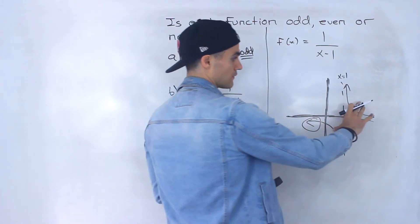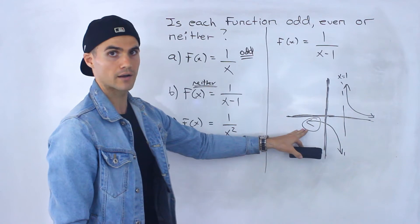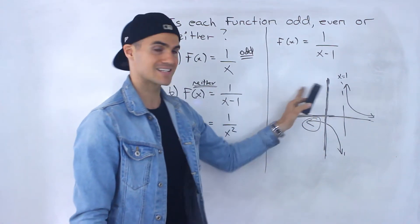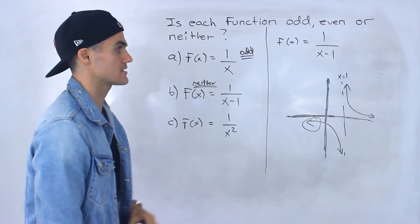And then same thing with odd. If I take this and reflect it in the y-axis and the x-axis, I'm not going to end up with that. Right? So no axis symmetry, no point symmetry. So this here is neither.